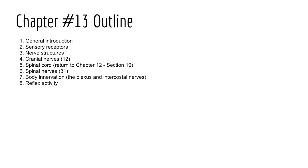In our studies, we'll be looking at sensory receptors and the various ways by which they can be classified. We'll also look at the gross and microscopic anatomy of a nerve fiber before studying the 12 cranial nerves in detail. We'll then revisit Chapter 12 to look at the spinal cord, then return to Chapter 13 to examine the 31 spinal nerves that innervate the body. Finally, we'll briefly consider body innervation as well as reflex activity.